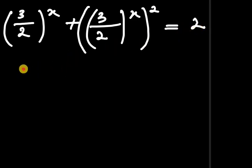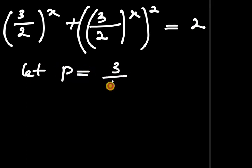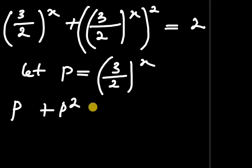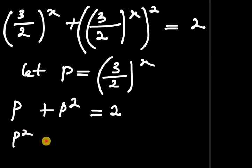We can let p equal to 3 divided by 2 all to the power of x. So the whole equation becomes p plus p squared equals to 2. Rearranging, this gives us p squared plus p minus 2 equals to 0. This becomes a quadratic equation.